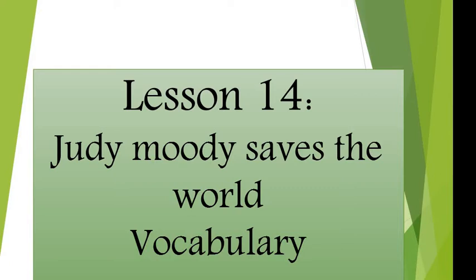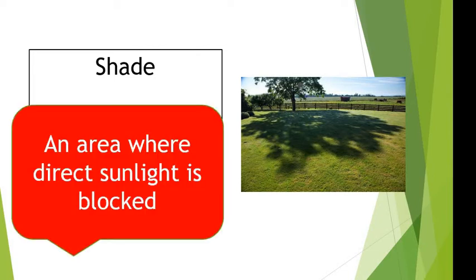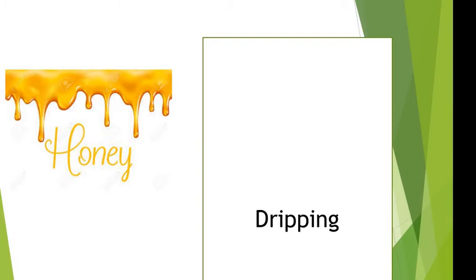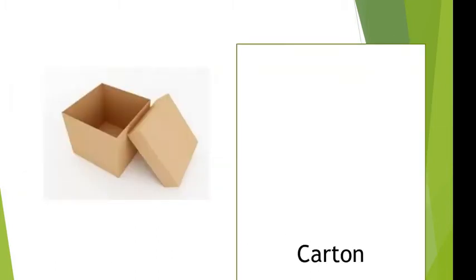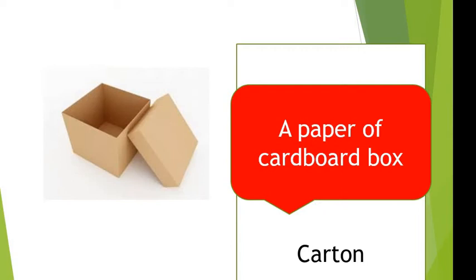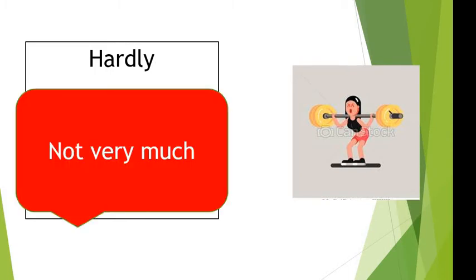Let's start with the new vocabulary. The first word is shade. Shade means an area where direct sunlight is blocked. Next word is dripping. Dripping means coming down in drops. The word carton means a paper or cardboard box. The word hardly means not very much.